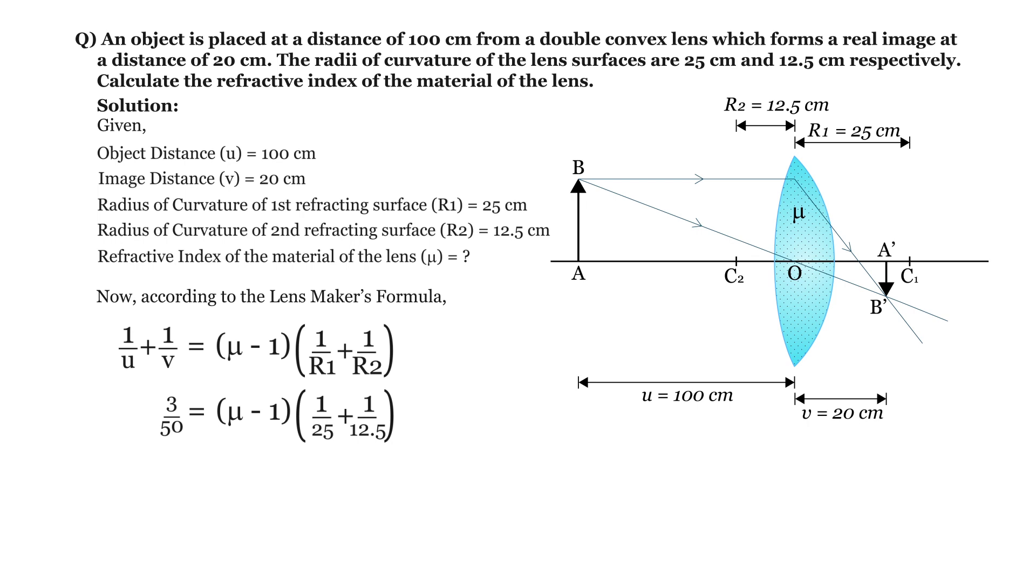So 3 by 50 equals mu minus 1 times the quantity 1 by R1 plus 1 by R2. Now R1 is 25 and R2 is 12.5, so 1 by R1 plus 1 by R2 equals 3 divided by 25. Therefore 3 divided by 50 equals mu minus 1 times 3 divided by 25. Solving this, mu minus 1 equals 1 divided by 2, which is 0.5. So mu equals 1 plus 0.5, which equals 1.5.